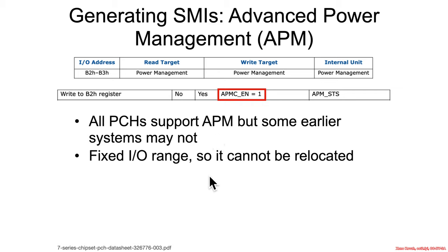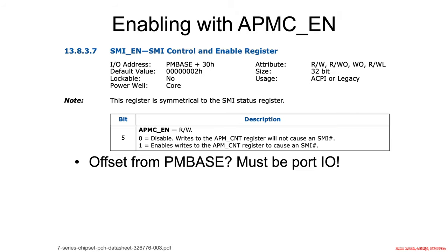This is a fixed I/O range — it's always ports B2 and B3, so it can't be relocated. It listed an additional enable of APMCN. That's bit 5 in the SMI enable register, and that register is found at PMBase plus 30.